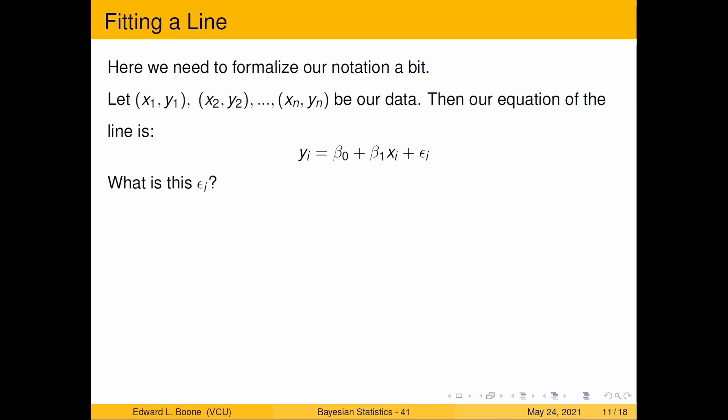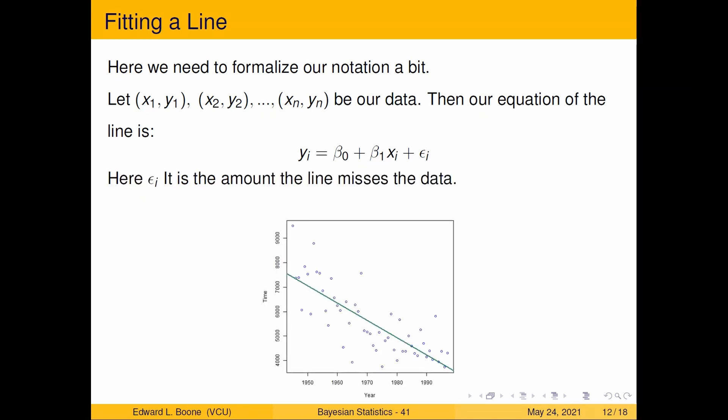So if you're interested, what is this thing? It's an error. So it is the amount the line misses the data. So here's the line. Here's a data point. Is that data point on the line? Nope. So the line and the data do not agree. There's a miss. They don't agree perfectly. So we just draw the line from the data point down to the line. Now notice that we're going completely in the vertical direction. We're not going perpendicular to the line. That's a different type of regression. Here we're just interested in the vertical distance.